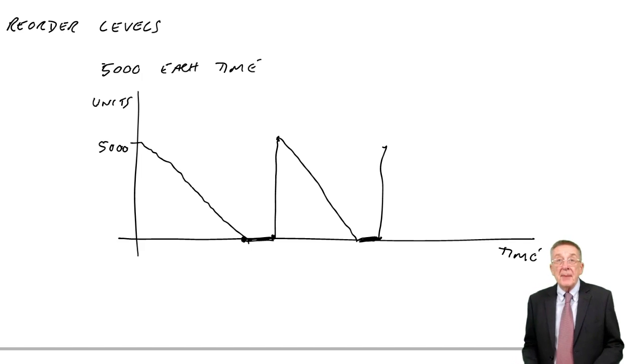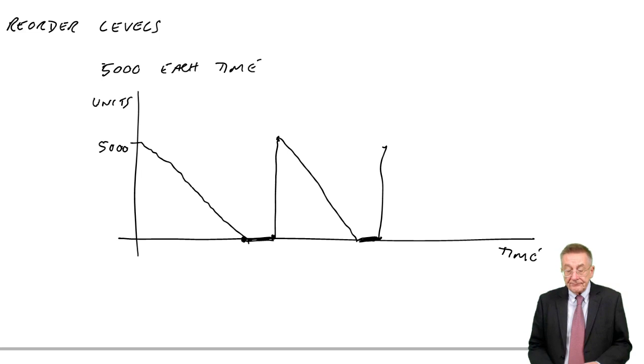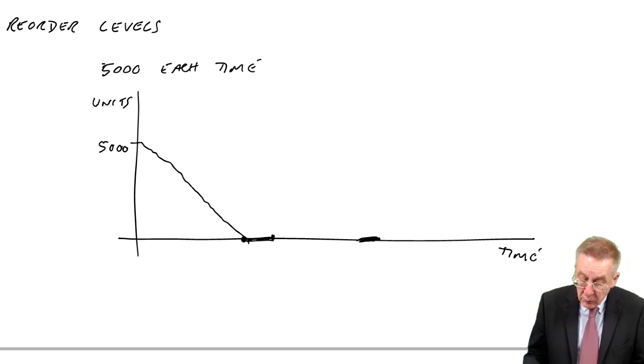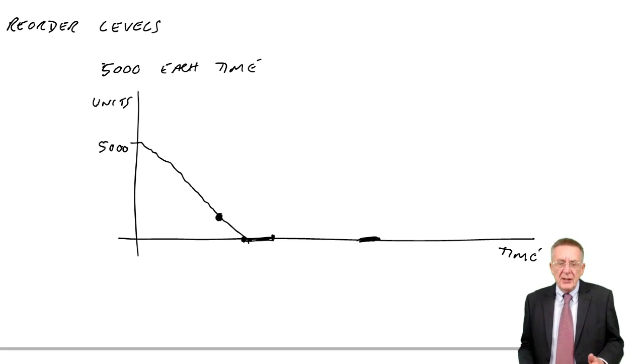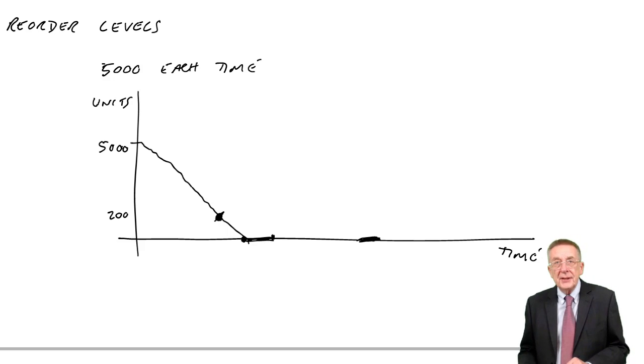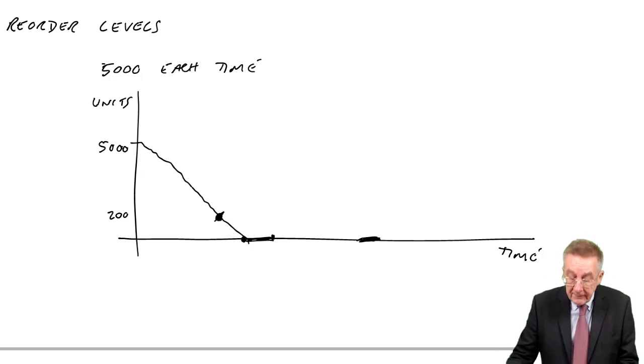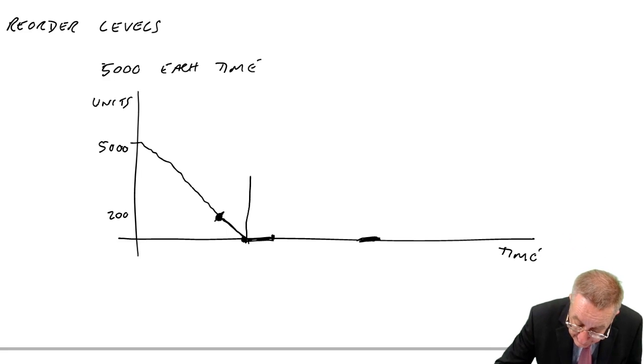They may wait and come back three days later, or they may go to another supplier and we lose the sales. And so, fairly sensibly, the way around that is, if you know that it's going to take three days to deliver, you don't wait until the inventory falls to zero, you place the order a bit earlier. In three days customers are likely to want 200 units, let's say. So let's place the order when there's still 200 units left. Three days later, the inventory has dropped to zero, and immediately the order comes in.